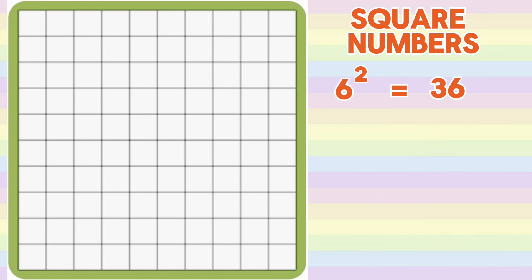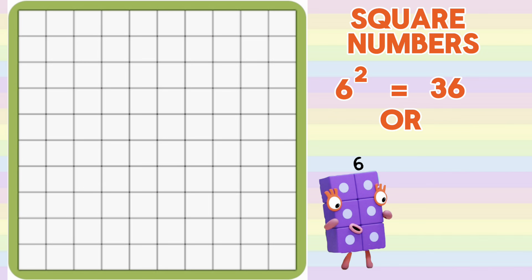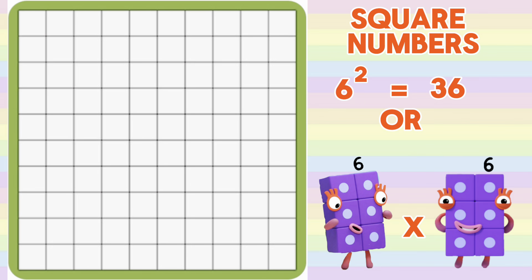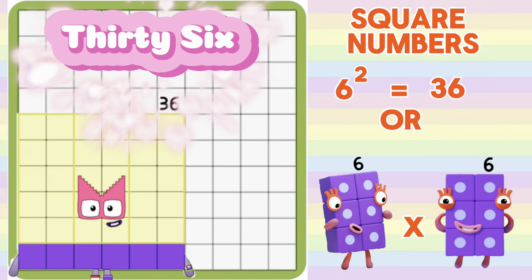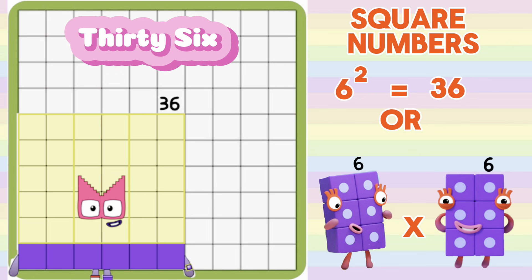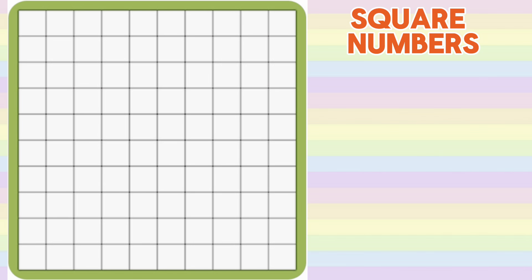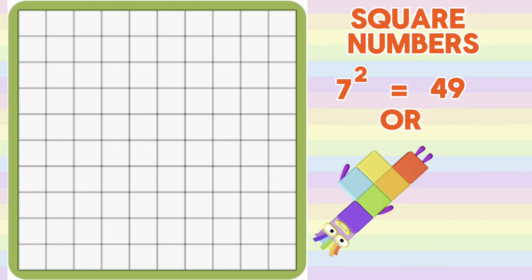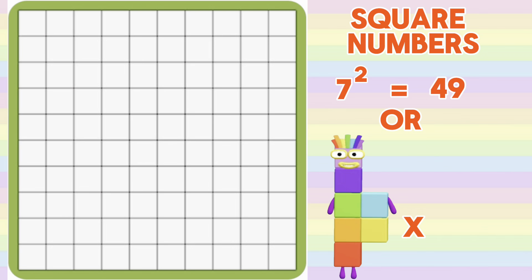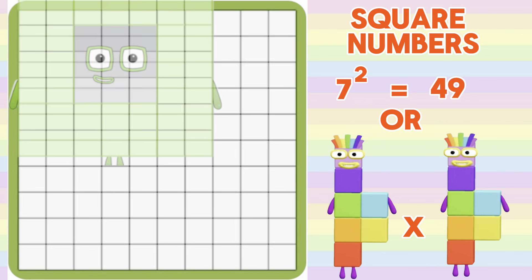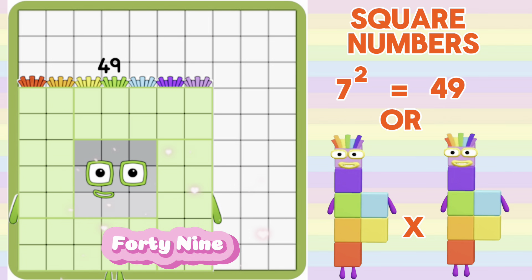6 squared is equals to 36, or 6 multiplied by 6 is equals to 36. 7 squared is equals to 49, or 7 multiplied by 7 is equals to 49.